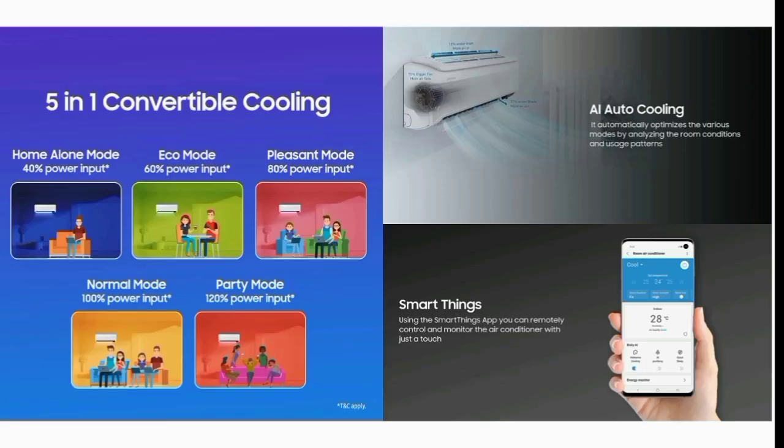Next, the 5-in-1 convertible feature. If you have a room, you will have a choice. The first option is Home. If you choose the Home option, you can choose one-zone cooling. The AC runs at 40% and the remaining 60% is energy saving.